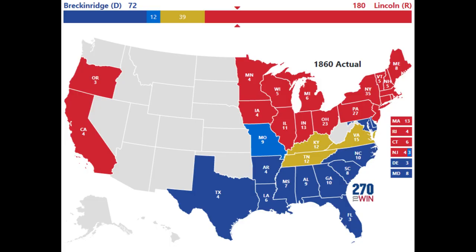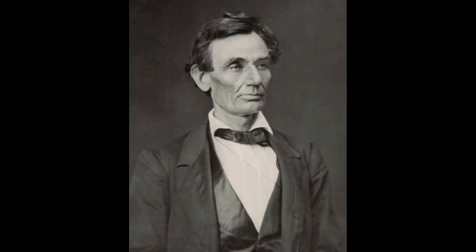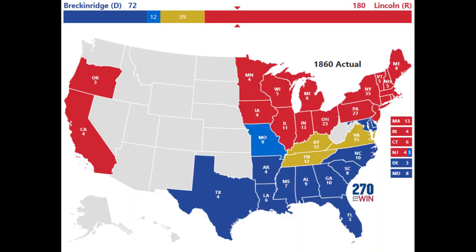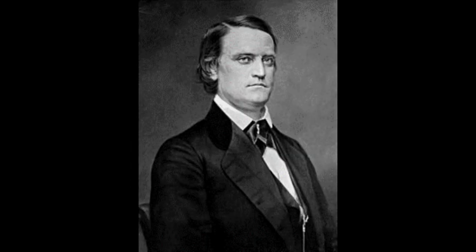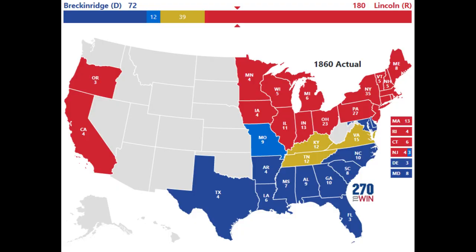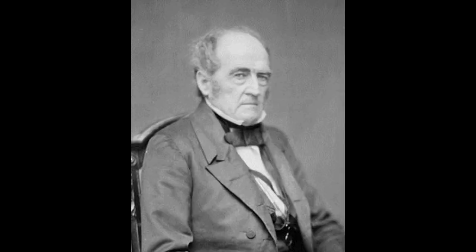The 1860 election saw four major candidates that ran for the presidency. Abraham Lincoln with the Republican Party was the historical winner. The Democratic Party split, offering two candidates, one oriented with the Northern States and one with the Southern. The Northern candidate was Stephen Douglas, while the Southern candidate was John Breckinridge. The final candidate was from the newly established Constitutional Unionist Party, with John Bell heading up the ticket.